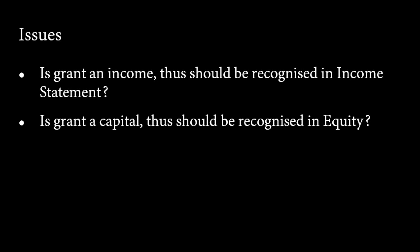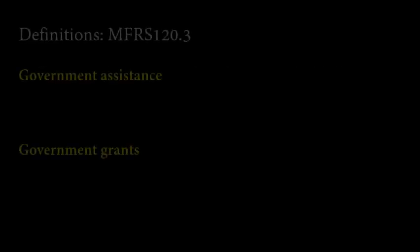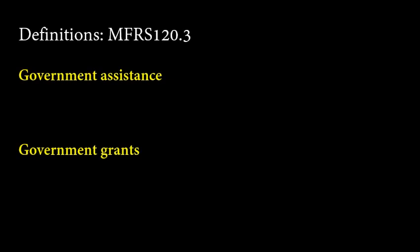So under MFRS 120, accounting for government grants and disclosure of government assistance, we will try to discuss a few relevant questions such as: is the grant an income that should be recognised in the income statement? Or is it a capital that should be recognised in equity? As usual, the first thing we need to discuss is the definition of terms so that we understand the scope in which the standard is applied.